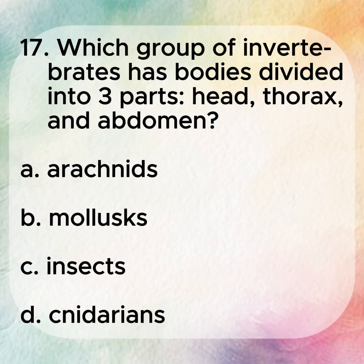17. Which group of invertebrates has bodies divided into three parts — head, thorax, and abdomen? A. Arachnids. B. Mollusks. C. Insects. D. Cnidarians.